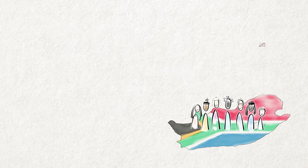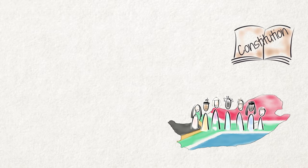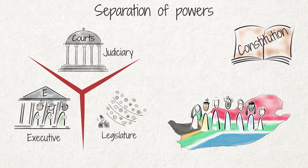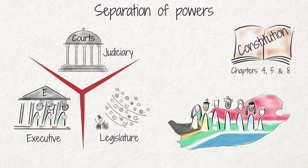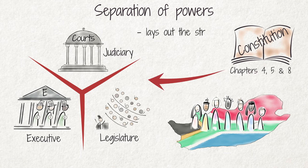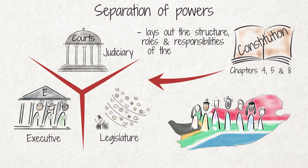In South Africa, the Constitution sets out the principle of the separation of powers. In Chapters 4, 5, and 8, it lays out the structure, roles, and responsibilities of the three branches of government.